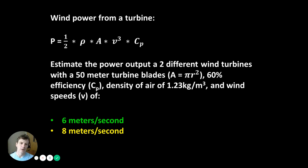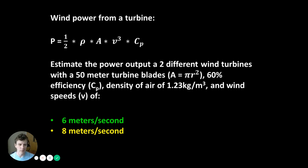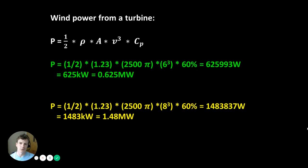Let's assume 50-meter turbine blades, so the rotor swept area A equals pi times r squared where r equals 50 meters. Cp equals 60 percent, air density is 1.23 kilograms per cubic meter, and we'll compare wind speeds of 6 meters per second versus 8 meters per second.